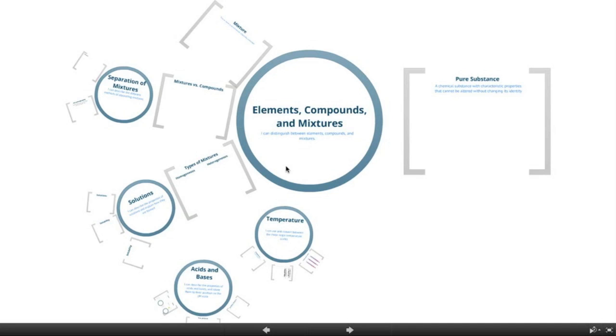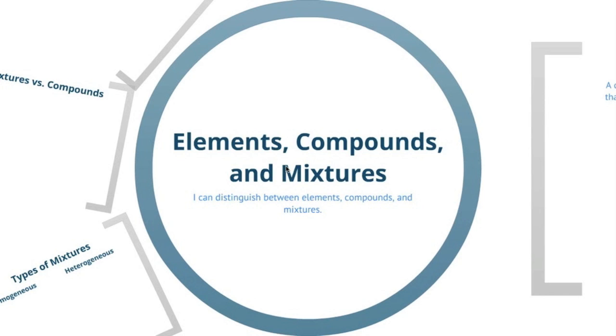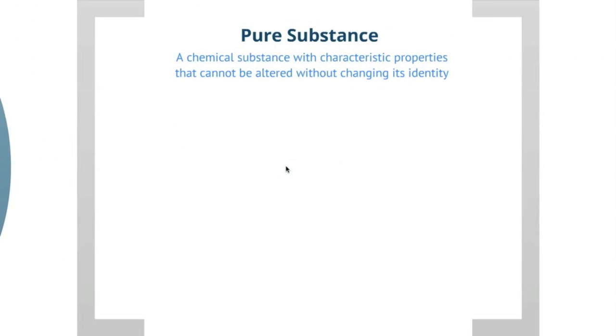So first, elements, compounds, and mixtures. By the end of this video, you will be able to distinguish between elements, compounds, and mixtures. Let's start with a pure substance. What is a pure substance? It is a chemical substance with characteristic properties that cannot be altered without changing its identity.